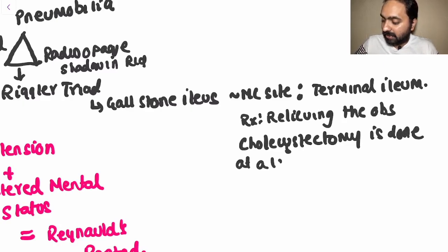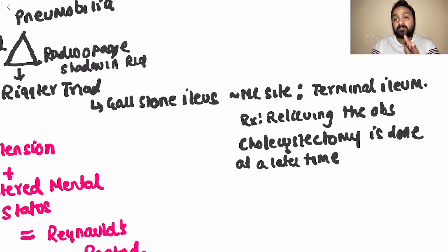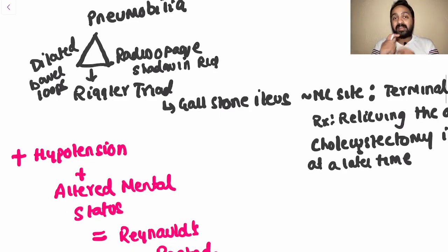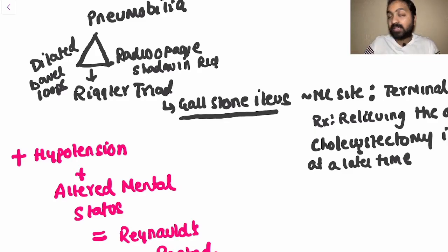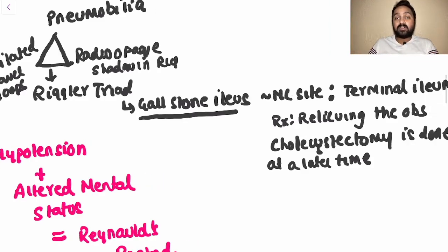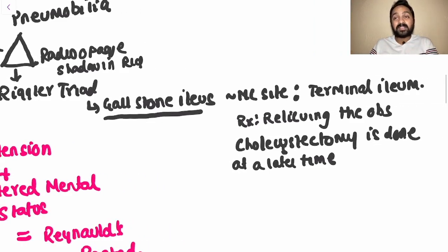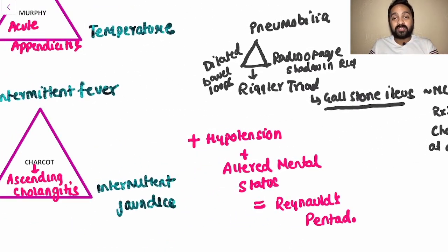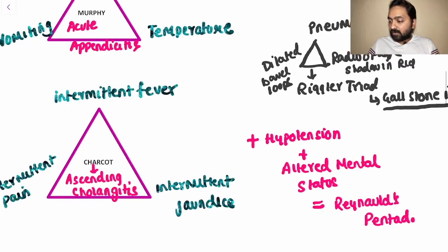The most common site of obstruction in gallstone ileus is the terminal ileum. For treatment, remember that we relieve the obstruction by performing an enterotomy and removing the stone. Cholecystectomy is done at a later time and is usually not performed in the same setting. These are the types of questions that can be framed from knowing a triad's components.